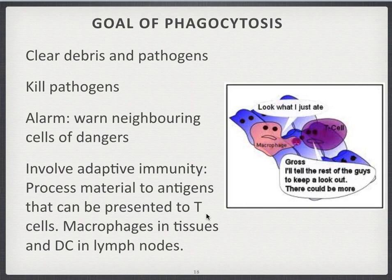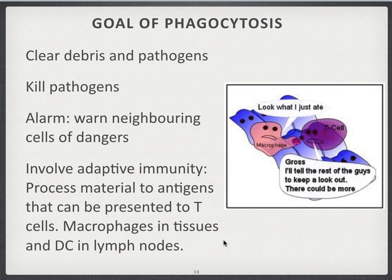The goal of phagocytosis is to clear debris and pathogens, and when they've eaten the pathogens, to kill them. By eating the danger you can start up a response to warn neighboring cells of imminent danger. Macrophages tell their neighboring cells to be on the lookout, while dendritic cells go to the lymph node to involve T-cell help. Processed antigens from dendritic cells can be presented to T-cells in the lymph nodes, and macrophages can do a similar thing to T-cells that have traveled to the tissue.